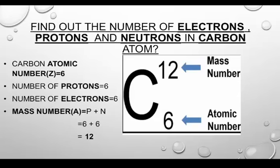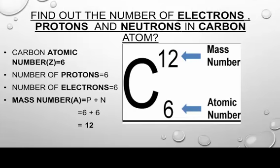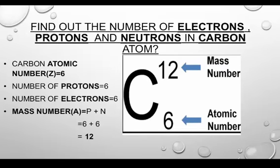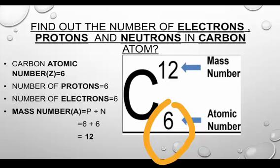The first example we are going to discuss: find out the number of electrons, protons, and neutrons in a carbon atom. The chemical symbol for carbon is shown on your screen. You can see that the atomic number of carbon is 6. Atomic number is the number of protons present in the nucleus, so if the atomic number of carbon is 6, its number of protons will always be equal to 6.